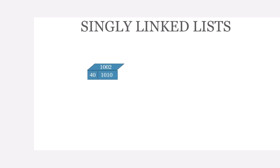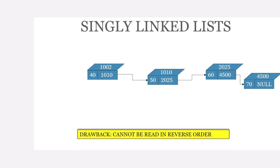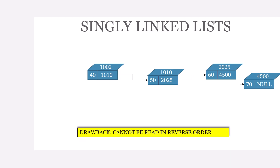This is a recap of the last session. We talked about singly linked lists - visually we have a node with a value of 40 stored and the address of the next node, and that's how we build the linked list. But a singly linked list has a drawback: we cannot read this list in reverse order, simply because we're not storing the address of the previous node. The solution to that is to have a doubly linked list.